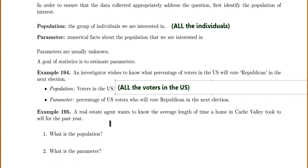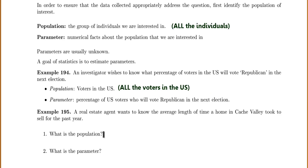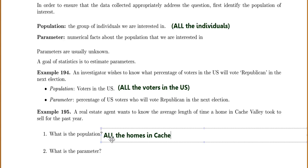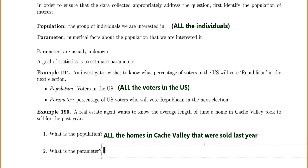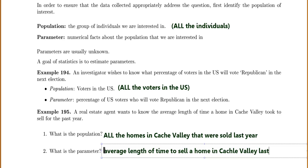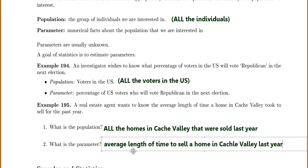For another example: a real estate agent wants to know the average length of time a home in Cache Valley took to sell in the last year. The population would be all the homes that were sold last year. The parameter is the average length of time to sell a home in Cache Valley last year.